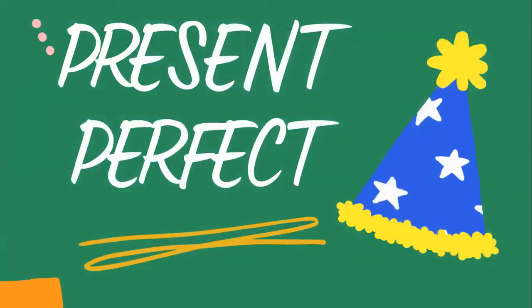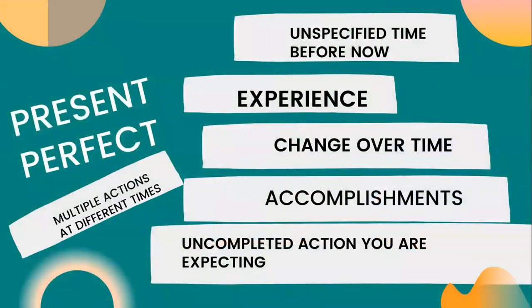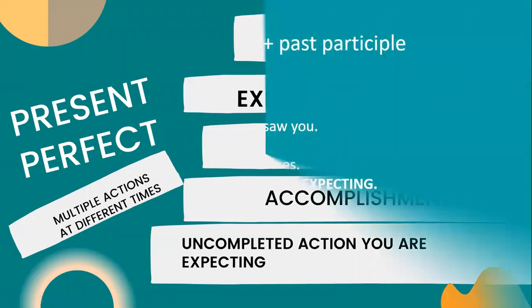Next comes present perfect tense. When do you make use of present perfect? For actions completed in the near past, for actions that happened in the past but whose time is not given, and for actions which began in the past but are continuing up to the time of speaking. Also for experience, change over time, accomplishments, uncompleted actions, and multiple actions at different times.